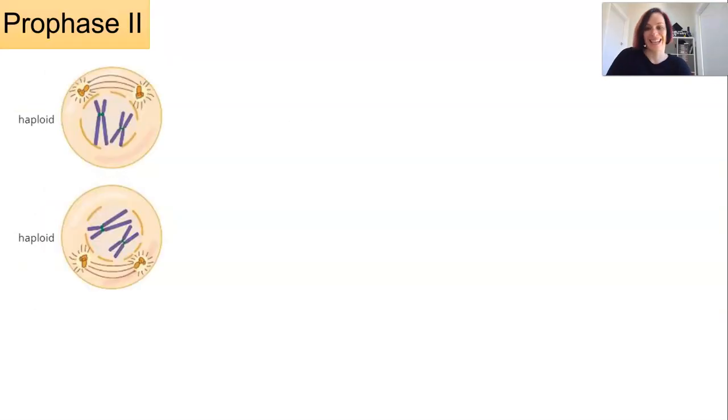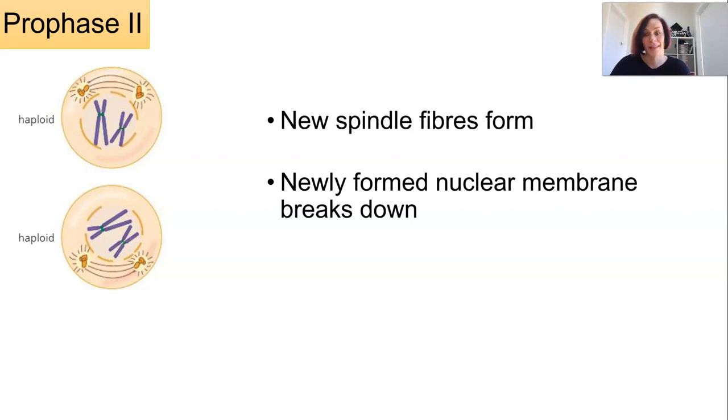Now we move into the second stage of meiosis and again we have prophase 2. So new spindle fibres form and the nuclear membrane breaks down. Yes we did just form the new membrane but now we're going to break it down again and the spindle fibres will attach to the centromeres of the chromosome.